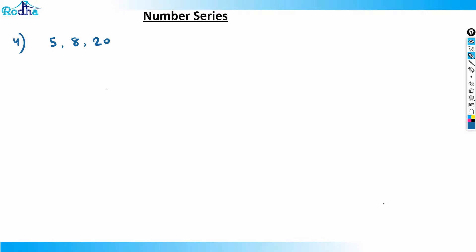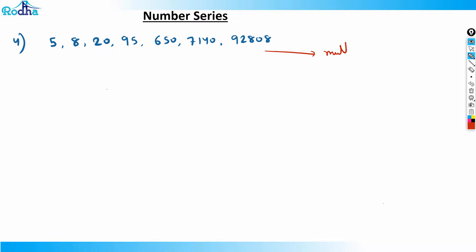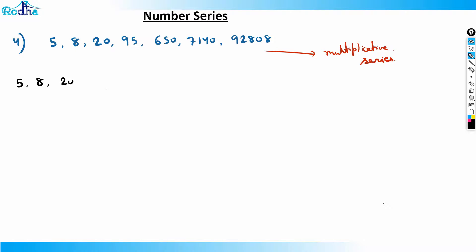Question 4: find the wrong number in the series 5, 8, 20, 95, 650, 7140, and 92808. I need to find what is wrong in this series. You can observe it's a multiplicative series — the numbers increase very fast, so something is being multiplied each time.